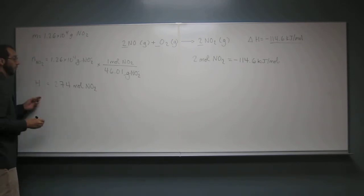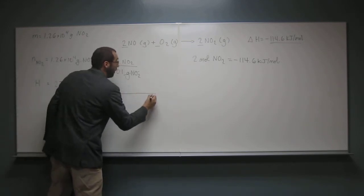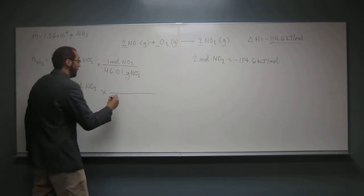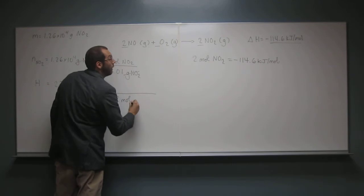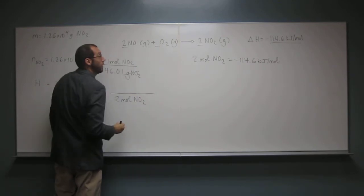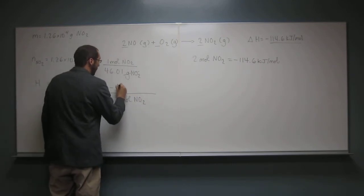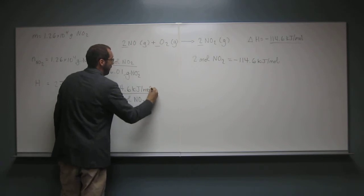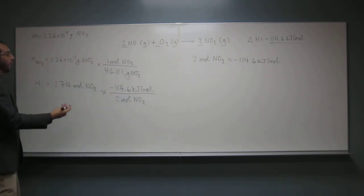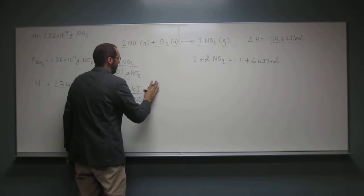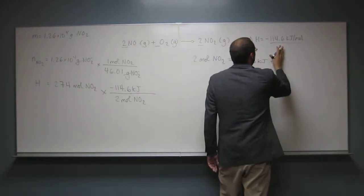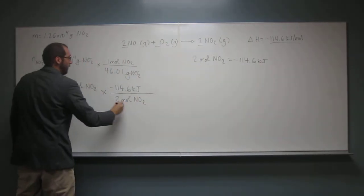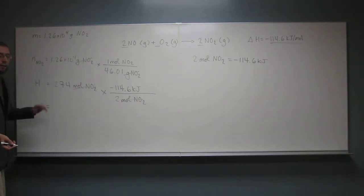So the energy is going to be, well, what do we do? We put moles of nitrogen dioxide that we want to get rid of that, right? So we've got two moles NO2, like that, for every minus 114.6. Like that. So that's per mole. In fact, we can get rid of that because we're using the moles there. When we divide, divide, we cancel. So cancel there, right? So the amount given off.